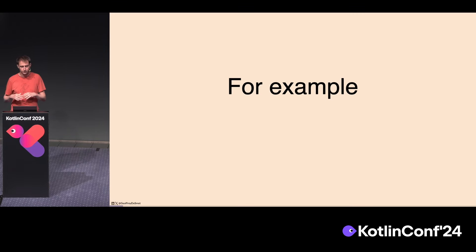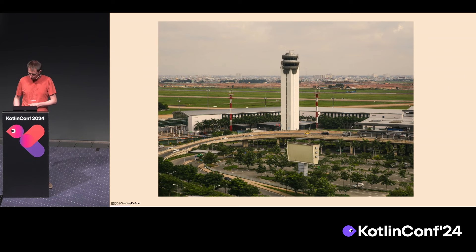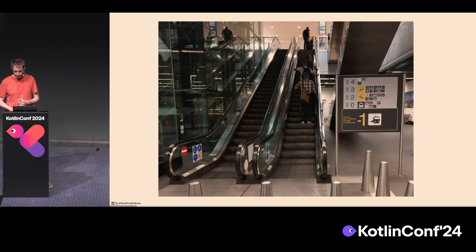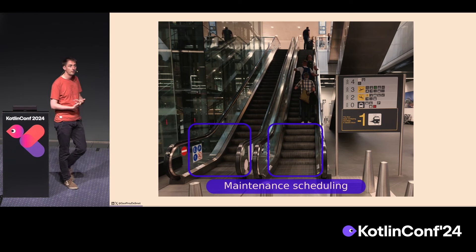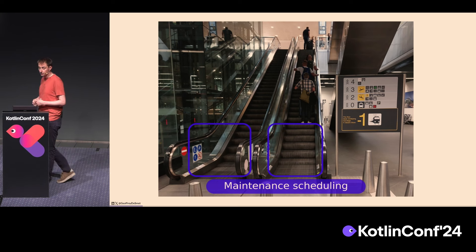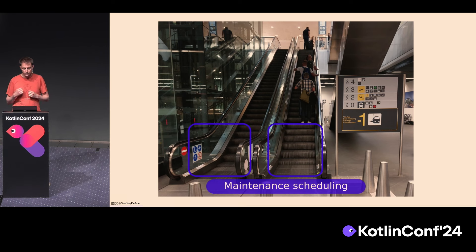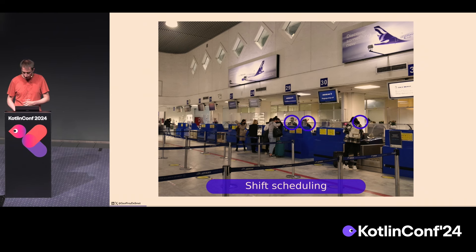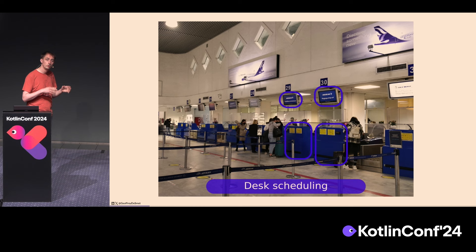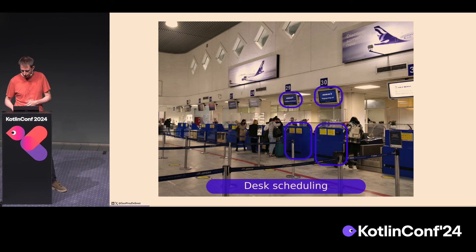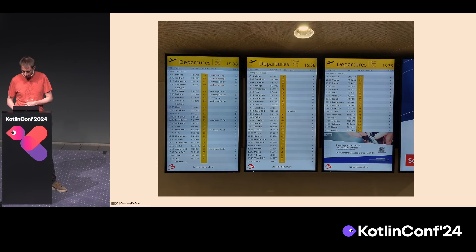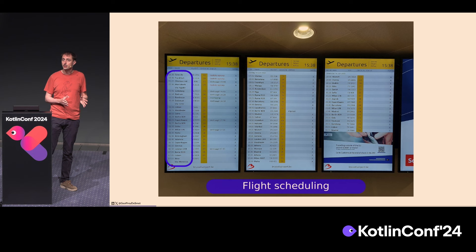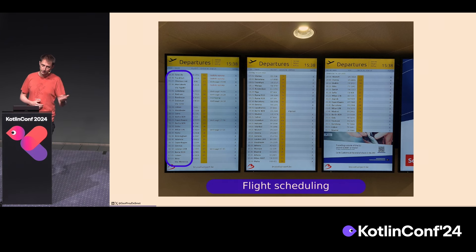Let me give you one example so you can start seeing them too. When you walk into an airport, the first thing you see is probably an escalator — those things need maintenance every six weeks or so. You need to plan which technician goes to which escalator at which time. You continue your journey and check in your luggage. That's a shift scheduling problem to decide which person will take your luggage, as well as a desk scheduling problem for the airport to decide which airline gets which desk.